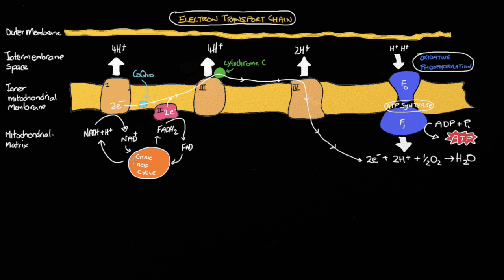So in short, the citric acid cycle generates reduced coenzymes carrying high energy electrons to complexes within the inner mitochondrial membrane.